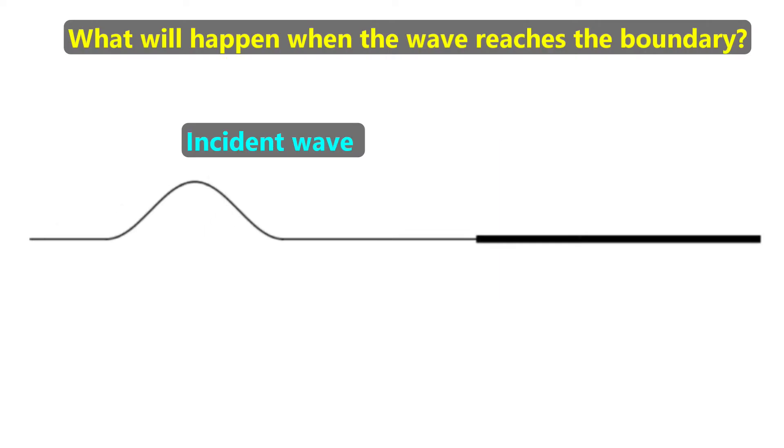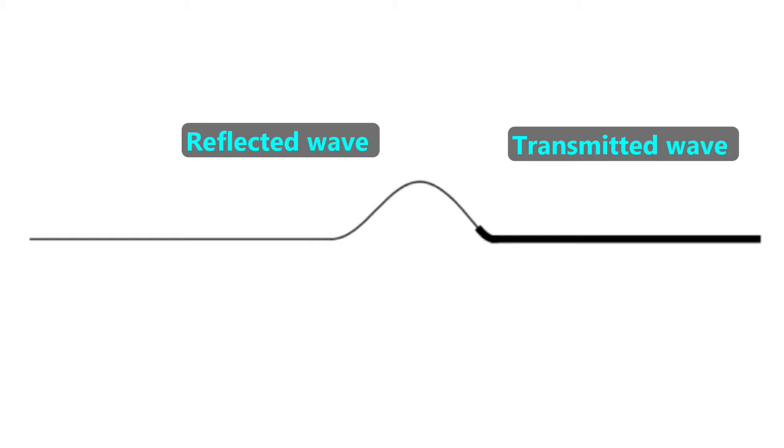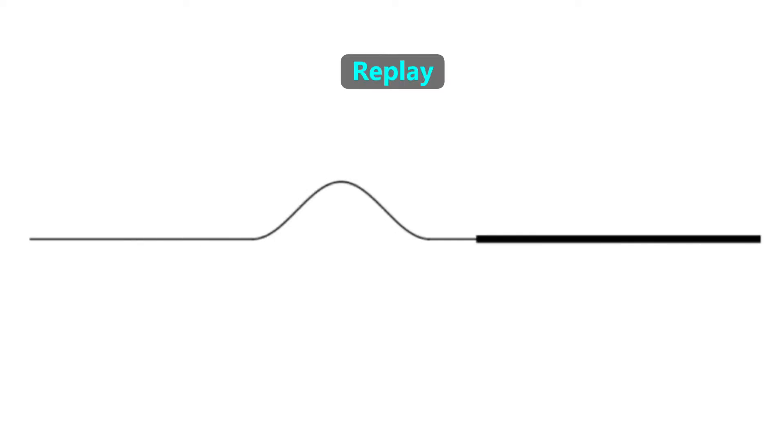Here's a variation of the string wave hitting a fixed versus an open end. This part of the string is made of light material. This part is made of heavy material. What do you think will happen when the wave reaches the boundary? Part of the wave's energy is reflected and part is transmitted. The reflected wave is inverted. The reflected wave behaves as though it has hit a fixed end because it encounters higher resistance to its oscillation.